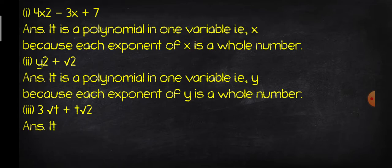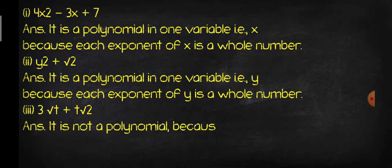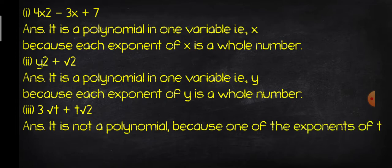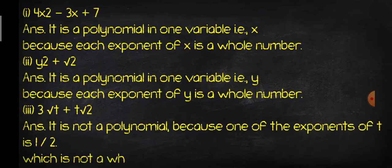Part 3: √2·t + t^(√2). The answer is it is NOT a polynomial. Why not? Because one of the exponents of t is 1/2, which is not a whole number. This is why it is not a polynomial.